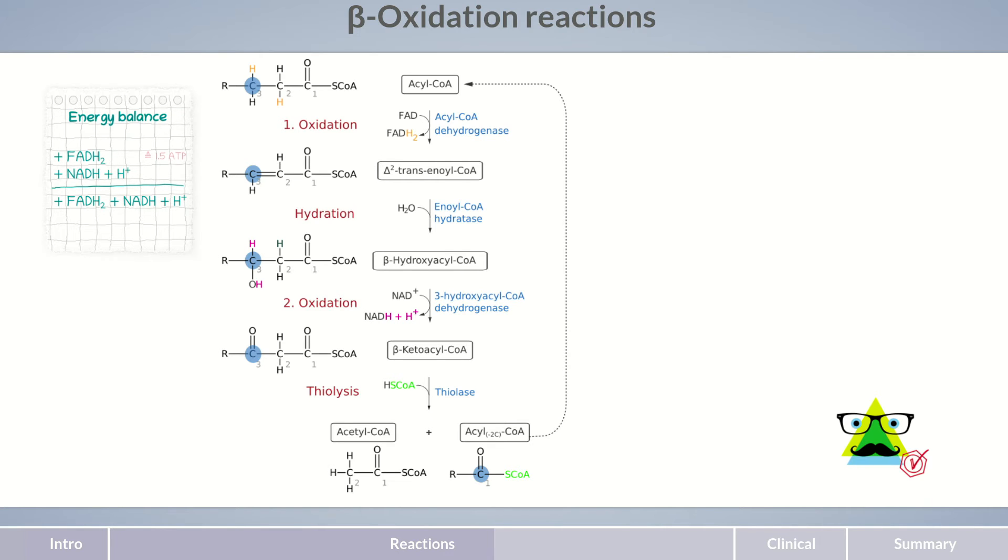Namely, 1.5 ATP molecules per FADH2 equivalent and 2.5 ATP molecules per NADH and H+ equivalent. In total, beta-oxidation provides four molecules of ATP per cleaved C2 unit. However, this energy balance is only valid for beta-oxidation in the mitochondrion and does not apply to peroxisomal beta-oxidation. The FADH2 formed there is not transported into the mitochondrion for ATP synthesis but is regenerated in the peroxisome under hydrogen peroxide formation. Therefore, peroxisomal fatty acid oxidation provides less energy than that in the mitochondria.